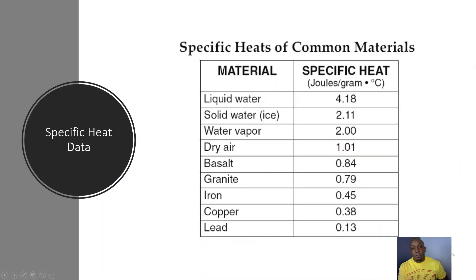Now let's go over some specific heat data for some common materials. Like we said on the previous slide, the lower the specific heat, the faster it's going to heat up, and the higher the specific heat, the slower it's going to heat up.